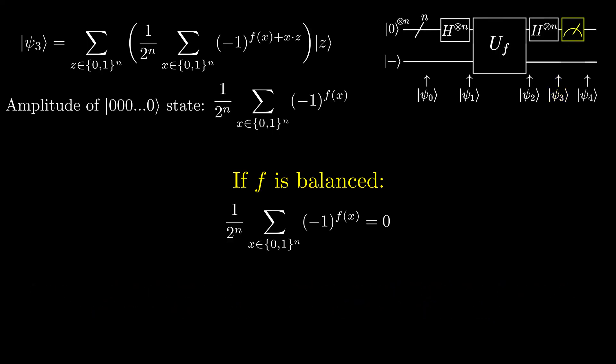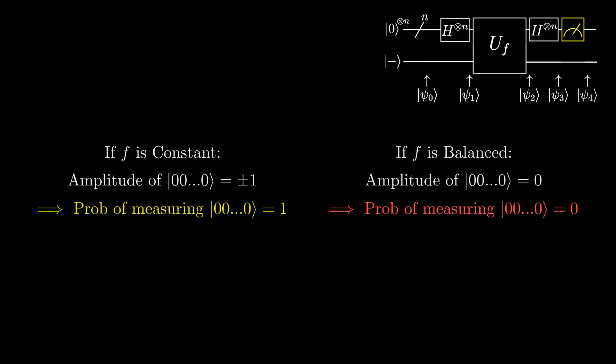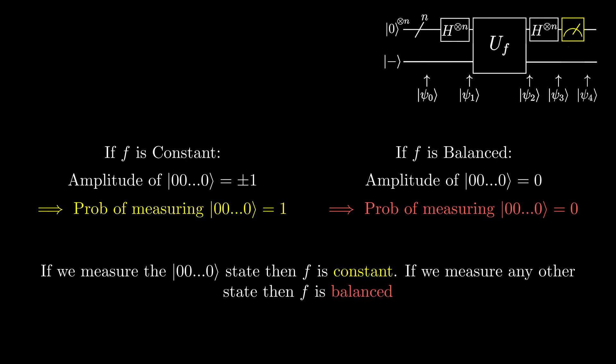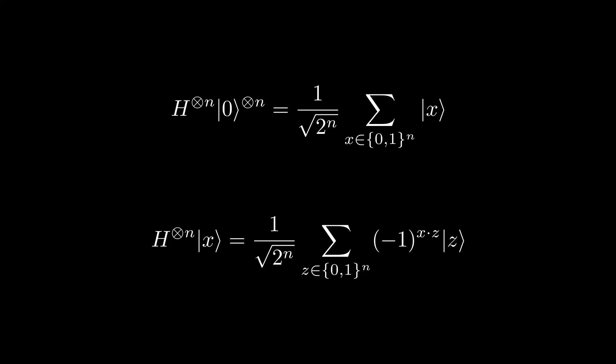Now we measure the qubits. If the function is constant, the amplitude of the all-zeros state is ±1, so the probability of measuring all zeros is 1. If the function is balanced, the probability of measuring all zeros is zero. Therefore, if we measure all zeros, the function is constant; if we measure anything else, the function is balanced. We have determined whether f is constant or balanced in a single query. The key takeaways from this algorithm are these two Hadamard identities — they will keep appearing in many quantum algorithms.